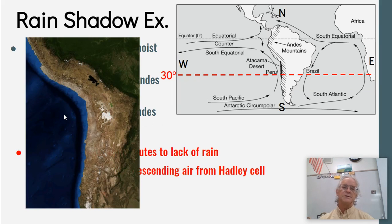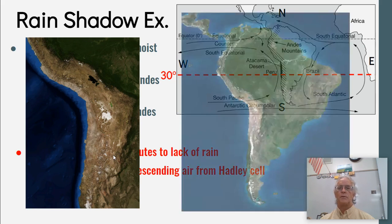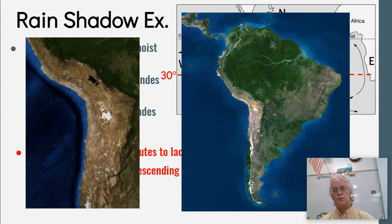We can see right here where the Hadley cell comes down and where it's the leeward side of the mountains — therefore there's very little, if any, moisture here, whereas over here there's still moisture. And again: no moisture on one side, tons of moisture on the other.